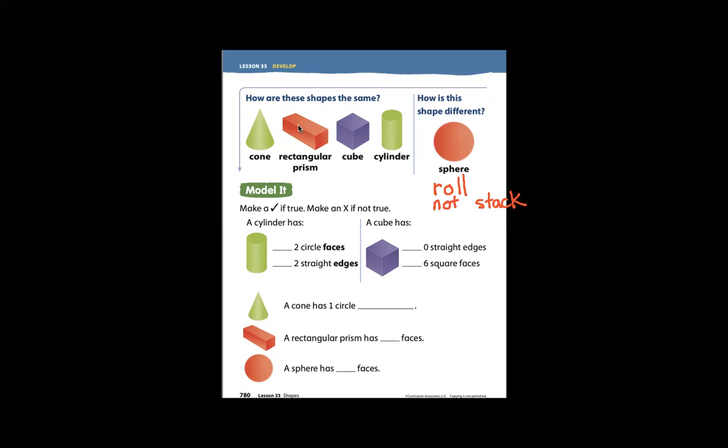A rectangular prism can be stacked. A cube has many sides and corners, and a cylinder can roll and stack.